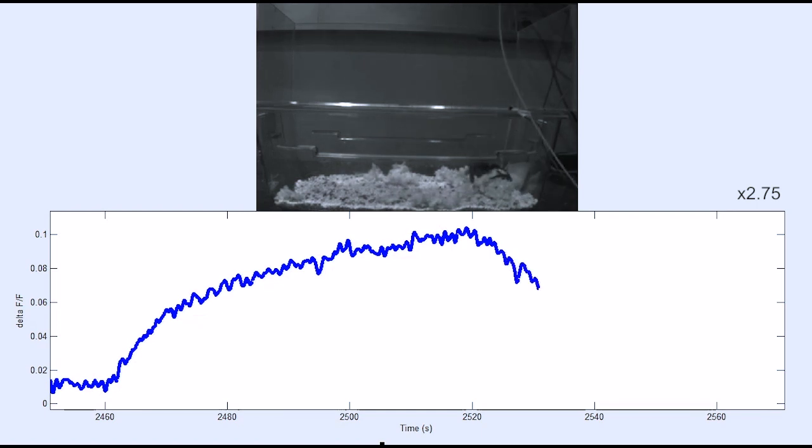As you can see from the trace, once the animal is no longer in the air, fluorescence signal decreases back to baseline. These results demonstrate how we can measure endogenous norepinephrine dynamics with high spatiotemporal precision in real time in freely-moving mice.